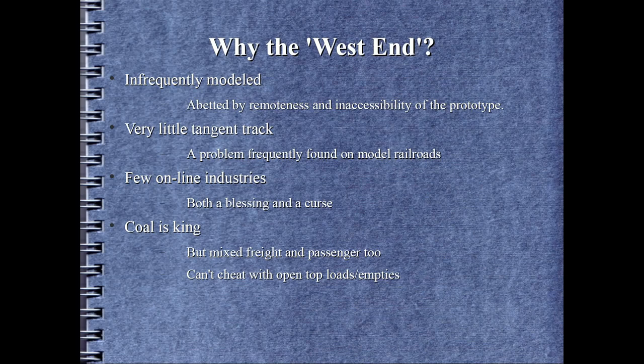But what makes the West End modelgenic? The West End has very little tangent — that is, straight — track, and very steep grades. Both of these conditions are frequent occurrences on model railroads. Most all of the West End is double-tracked, with triple-track in many locations. If you are an adherent of John Armstrong, the Dean of Track Planning, double-tracking makes for a better model railroad, especially one for a small to medium space. There are very few online industries on the West End — even the ubiquitous coal mines are, with only a couple of exceptions, off of the mainline. A model railroad that accurately models the West End will have little or no switching, but industries and the track work to reach them do not have to be constructed. This will be a through-route model railroad. Coal was, and is, king on the West End, although for most of its heyday there was mixed freight and passenger trains aplenty. Because of the open-top coal hoppers, traffic has to be strict loads east, empties west pattern.